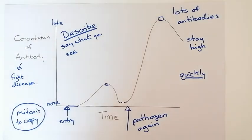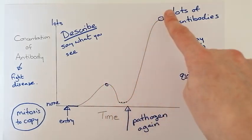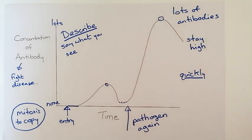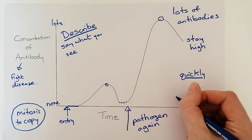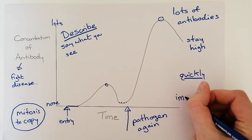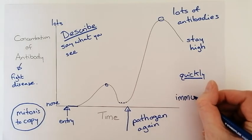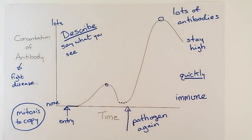Now what we're going to do next is we are going to have a look at a graph that instead of showing a disease, you getting over that disease, learning how to fight it so the second time you see it you don't get ill and you are now immune. What we are now going to do is see another graph which shows you what happens in terms of concentration of antibodies and time when you are given a vaccination.